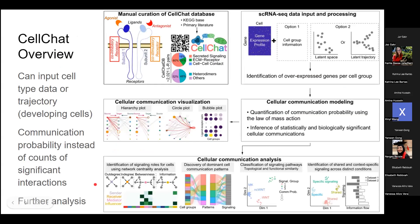Now moving on to CellChat. The database is a little larger and includes more types of proteins. The input can be the same as CellPhone — inputting cells annotated with their cell types — or it also has the option to input a trajectory. This could be useful if you're studying development or some kind of time series. Instead of doing random shuffles and creating a null distribution, they use something called communication probability, which they note isn't technically a probability.